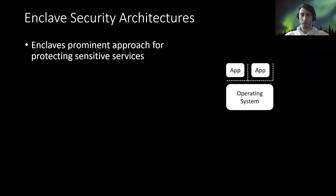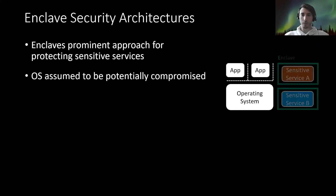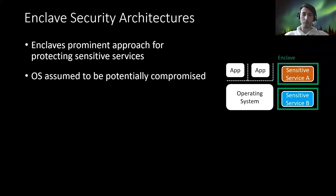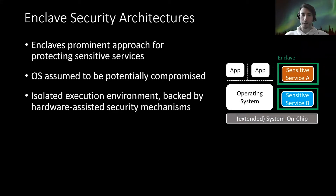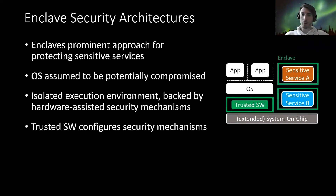If we assume an operating system which runs multiple processes or apps, and in our setup we assume that the OS is potentially compromised, then an enclave security architecture is typically used to protect sensitive services in isolated compartments, which we call enclaves. These isolated compartments are usually backed by hardware-assisted security mechanisms implemented in the system-on-chip. The configuration of the security mechanisms is done by a trusted software component which runs in the highest privileged software level, or in some enclave architectures, the trusted component is also just represented by microcode.